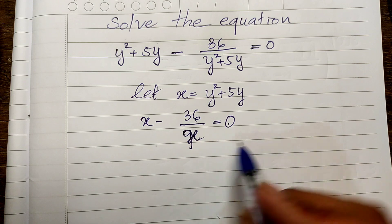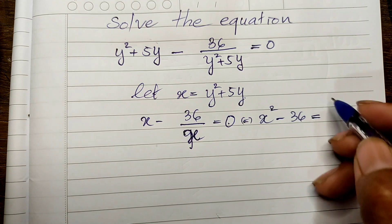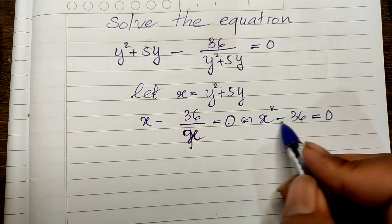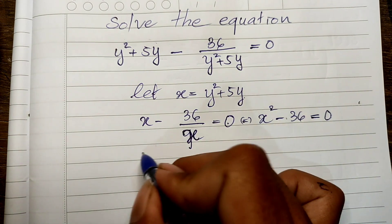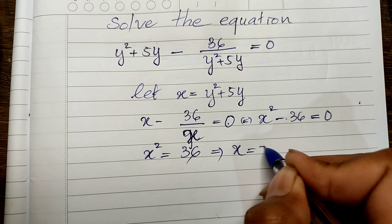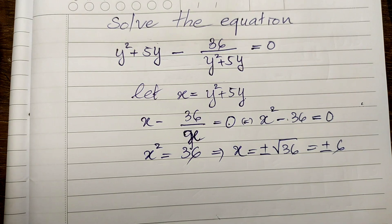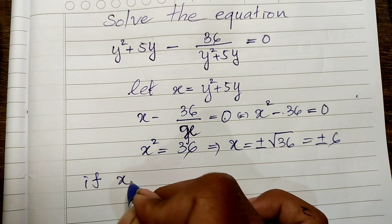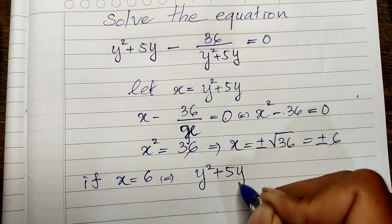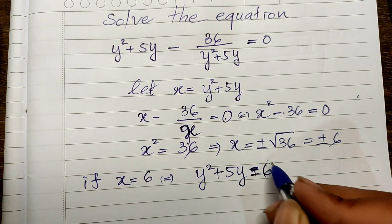So I multiply both sides of this equation by a, and I get a squared minus 36 equals zero. Then I move the 36 from the left side to the right side, so I get a squared equals 36, and we get a equals 6.